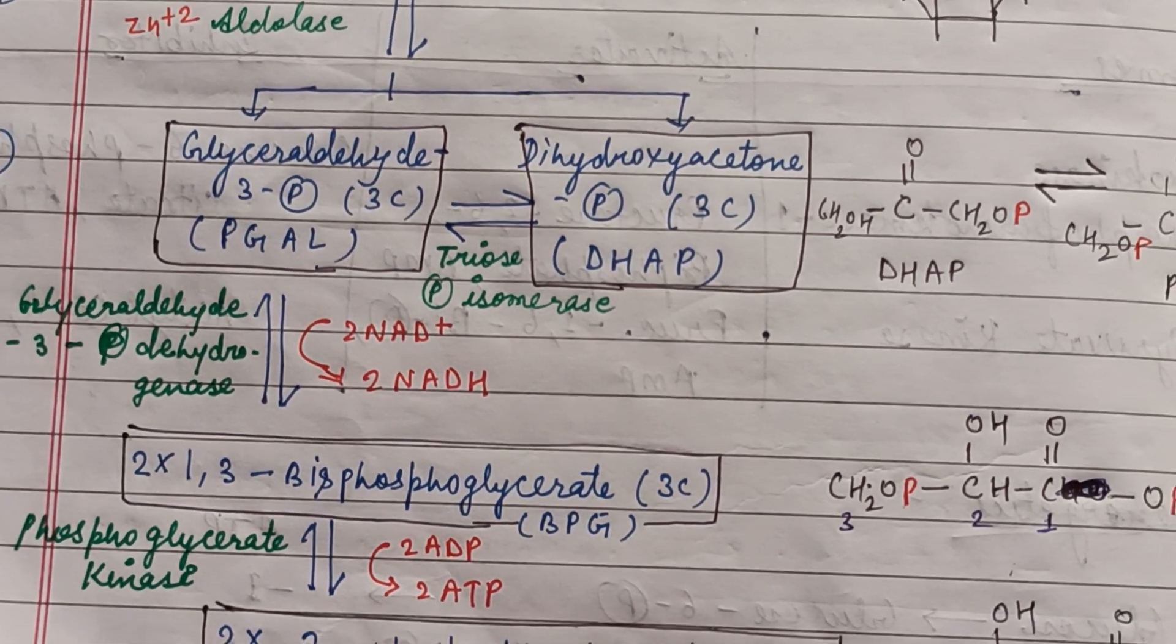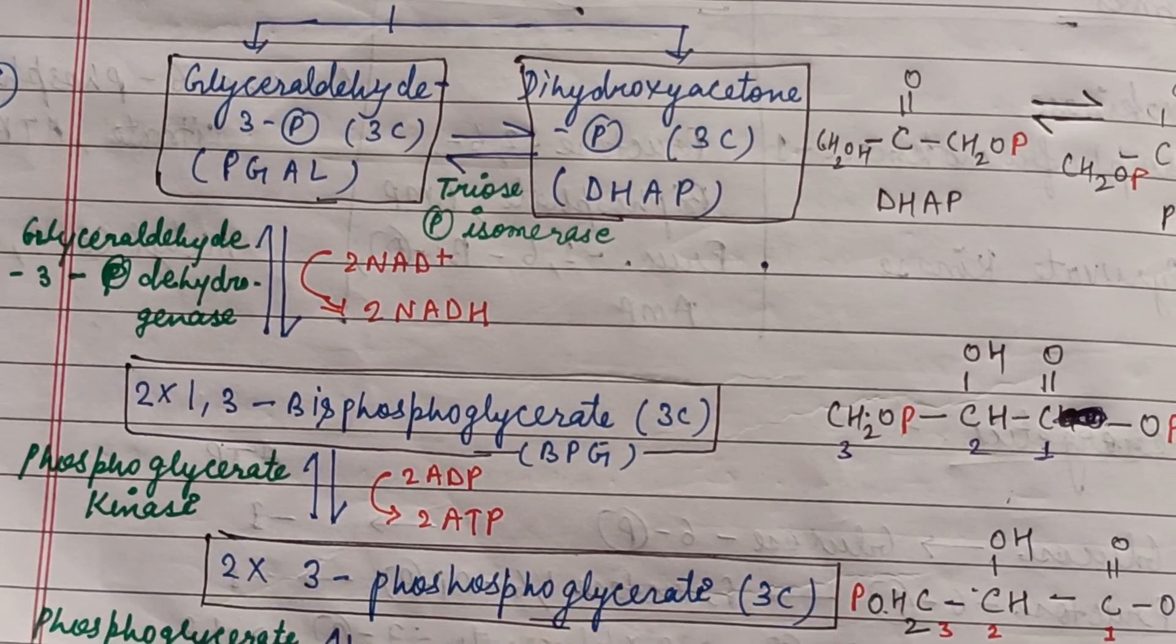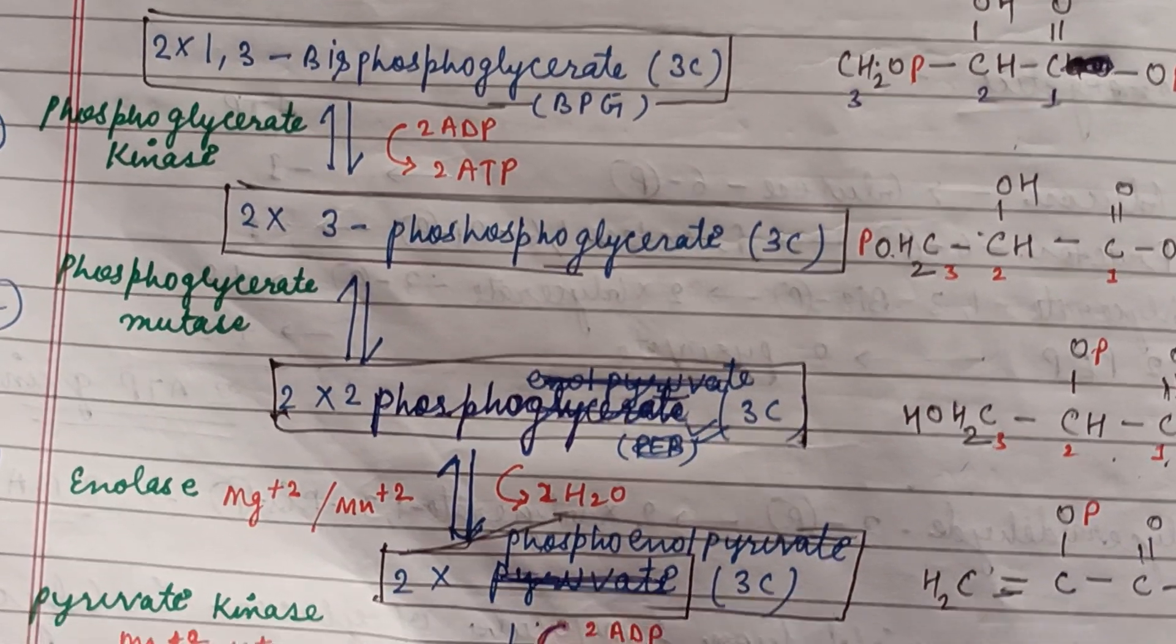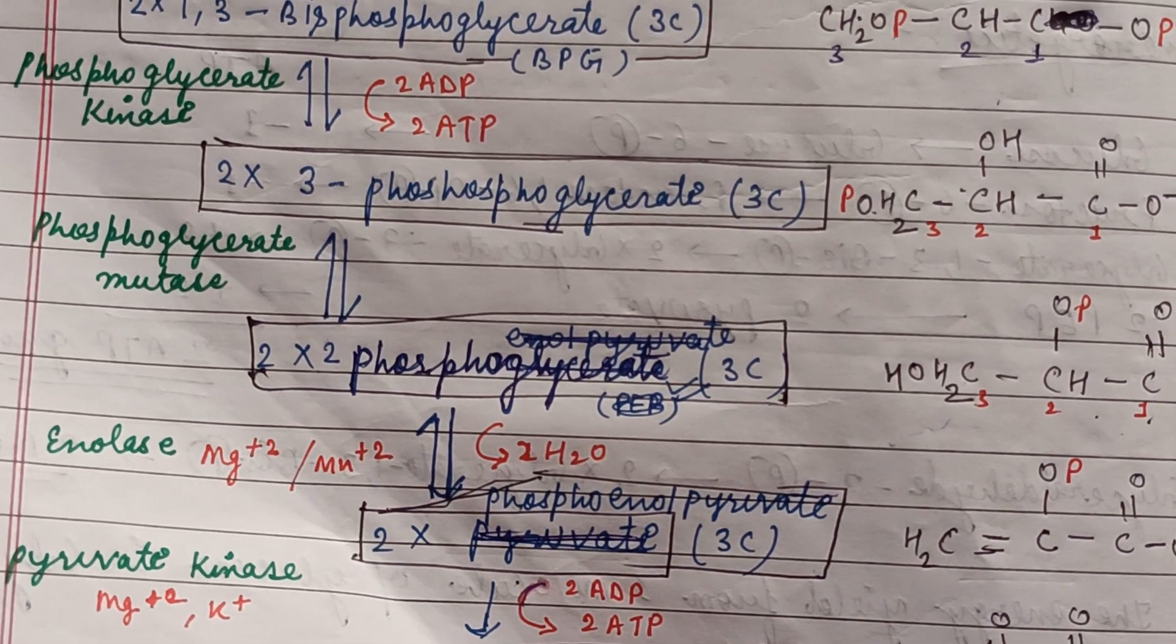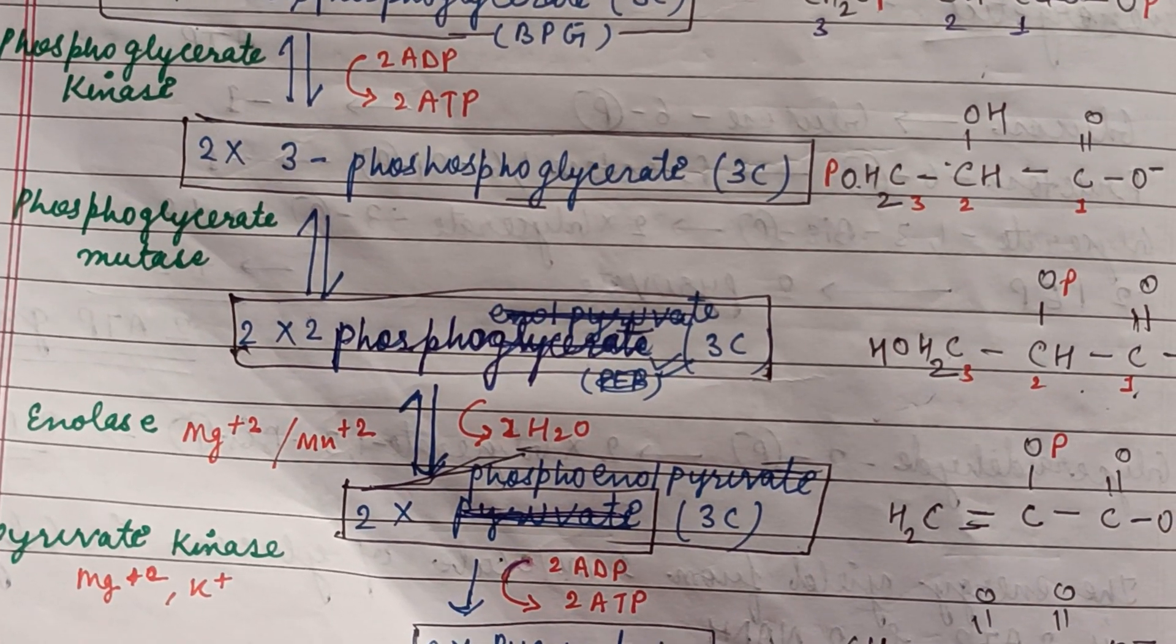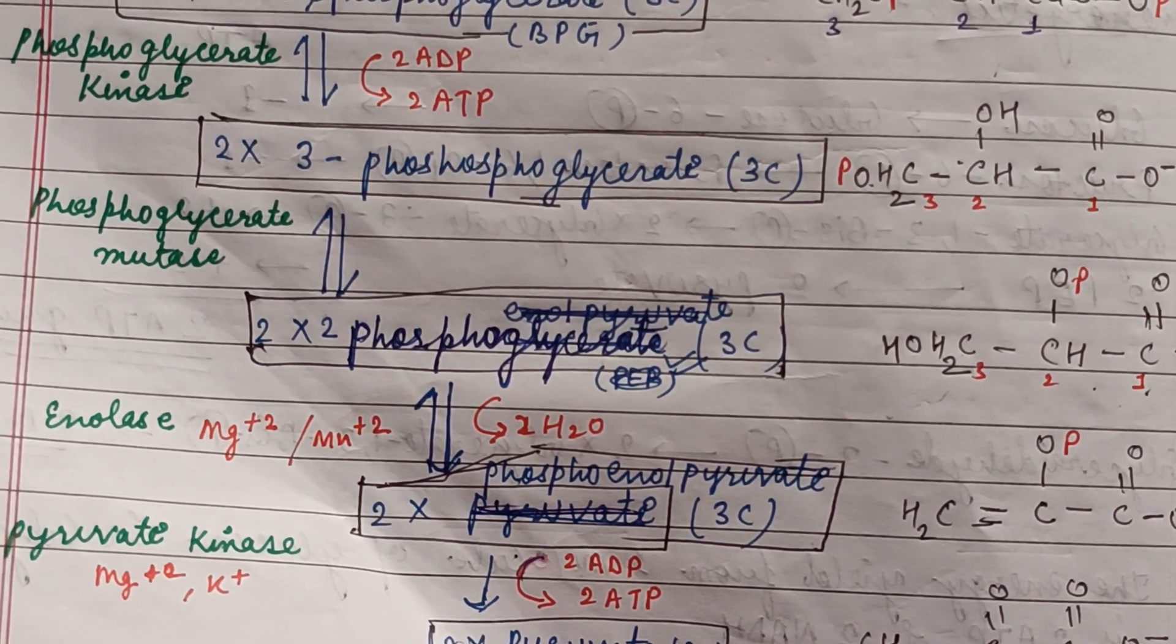We get two moles of PGAL, bisphosphoglycerate, and it is further converted into 3-phosphoglycerate and then 2-phosphoglycerate. Again, it is converted into phosphoenolpyruvate.